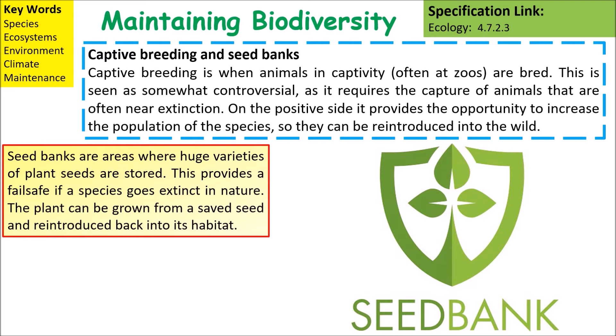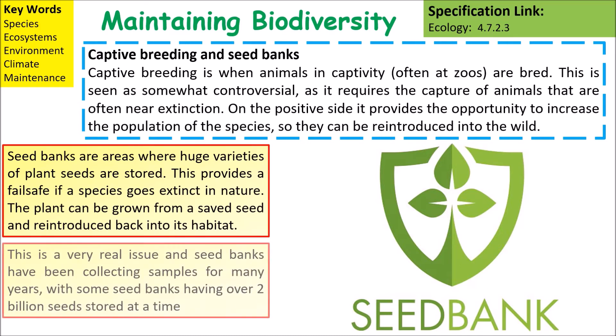Seed banks are areas where huge varieties of plant seeds are stored. This provides a fail-safe if a species goes extinct in nature, as the plant can be grown from the saved seed and reintroduced back into its habitat. This is a very real issue, and seed banks have been collecting samples for many years, with some seed banks having over 2 billion seeds stored at any one time.